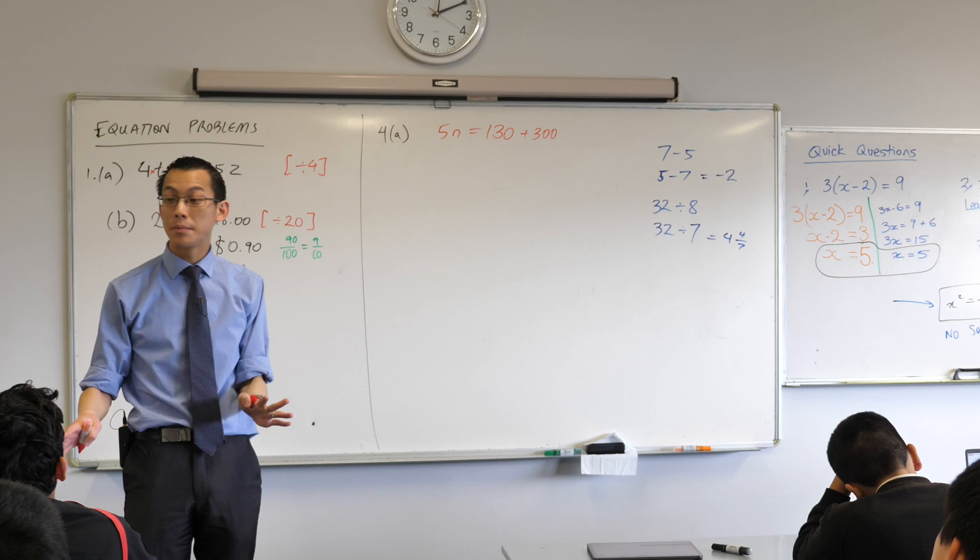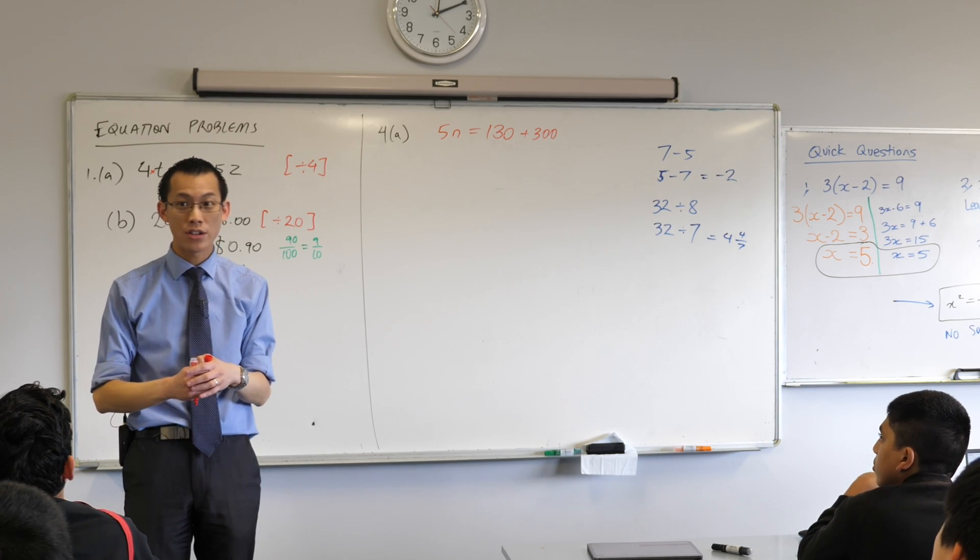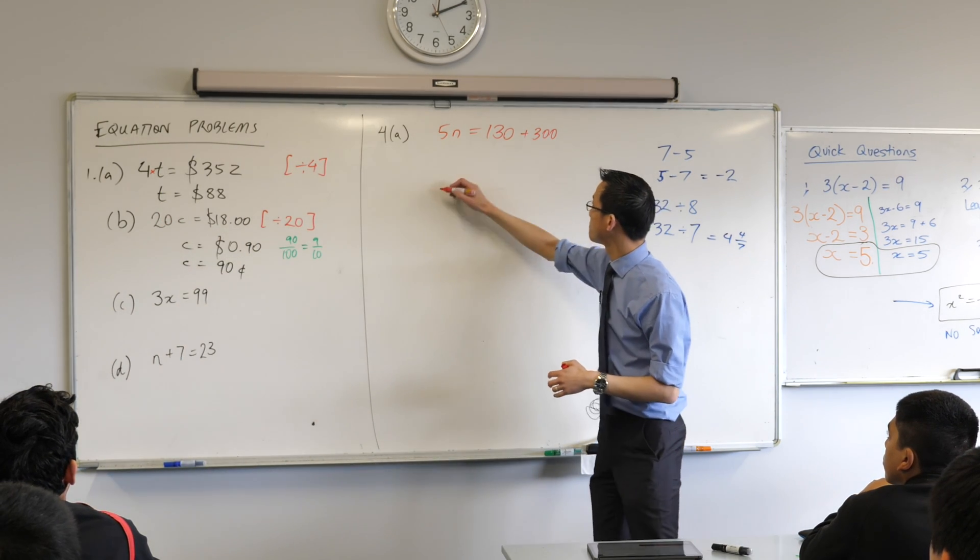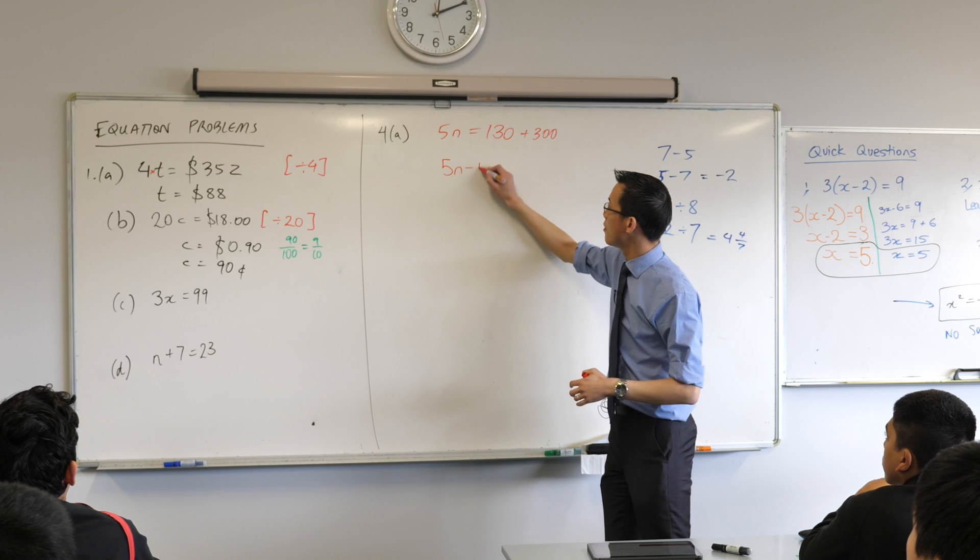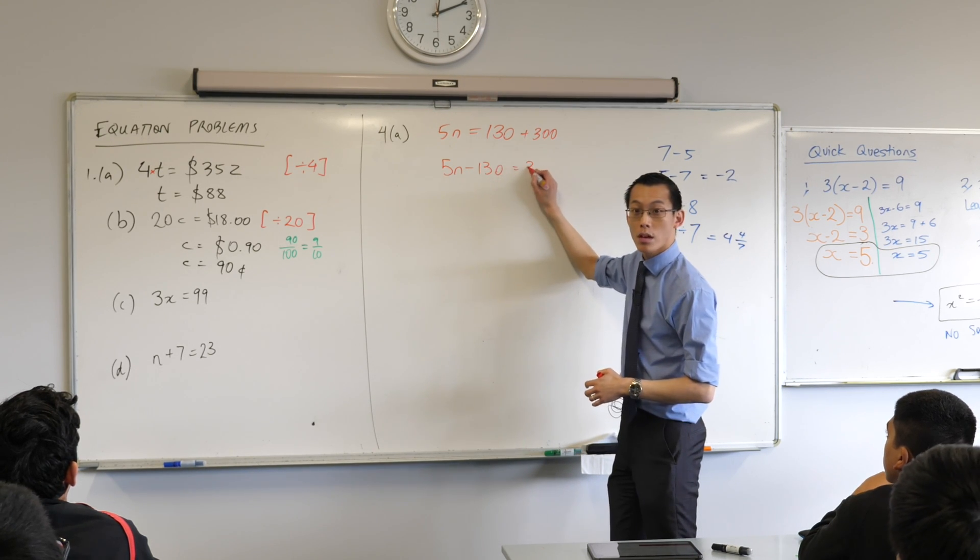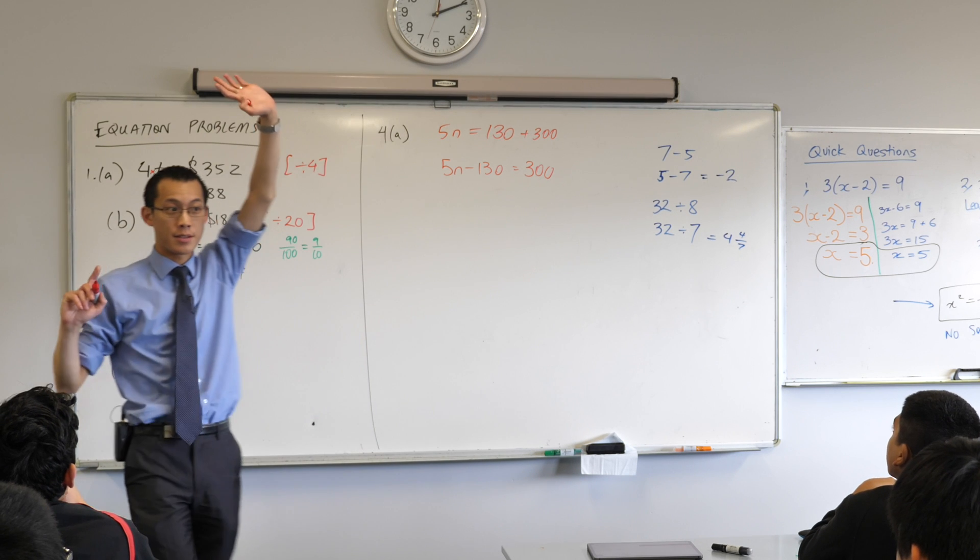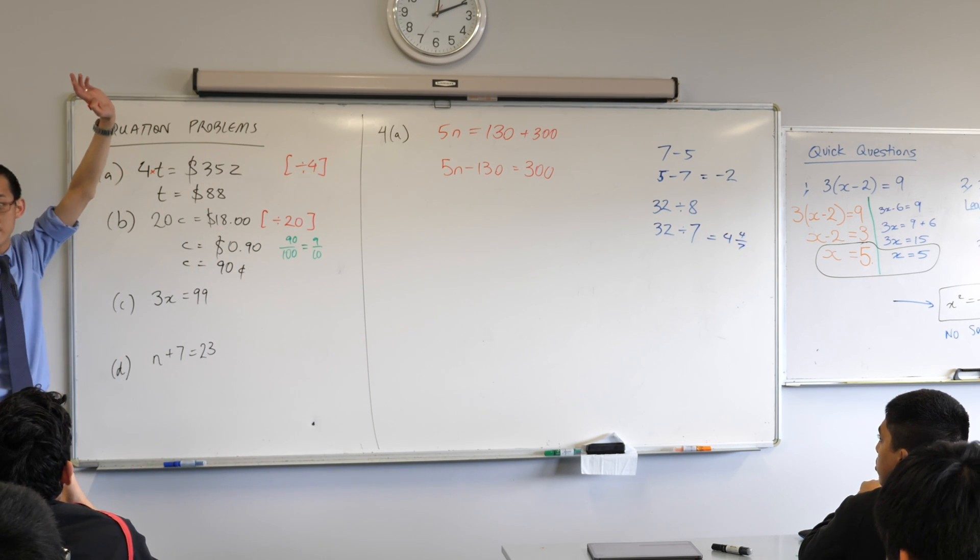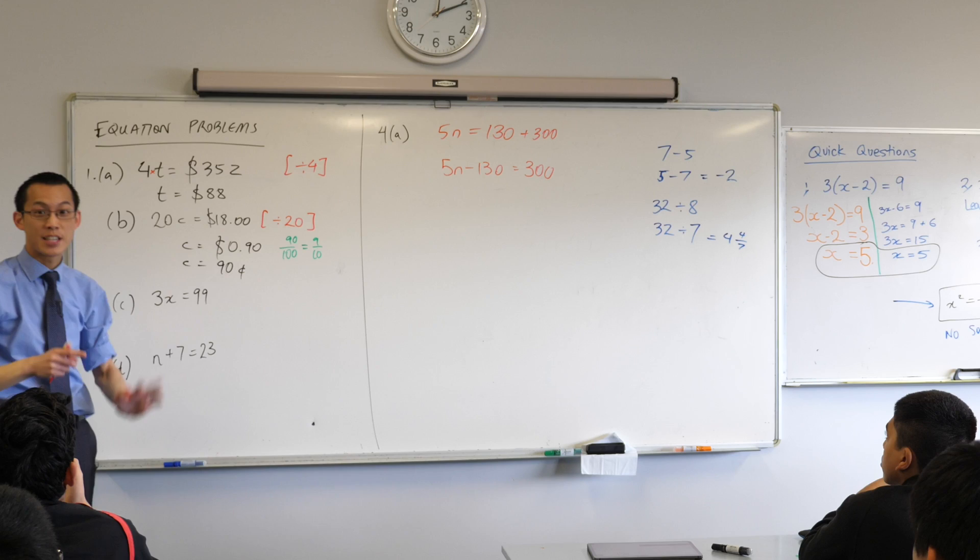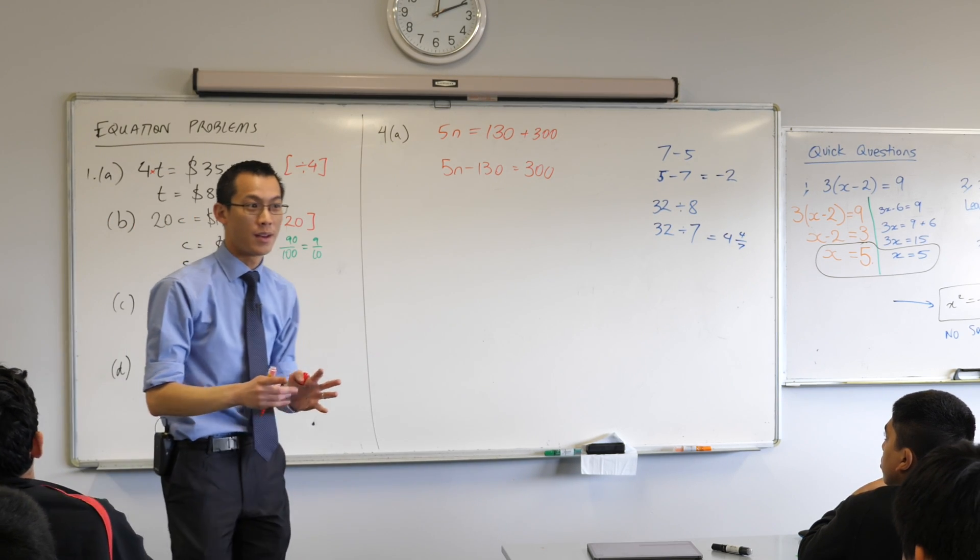There's a lot of hands that didn't go up. Did someone have a different equation? 5n minus 130 equals 300. Okay did anyone have what Leah wrote down as theirs? Okay interestingly I have my hand up because that's the one I had written down.